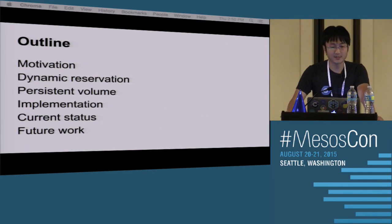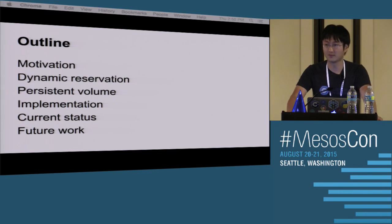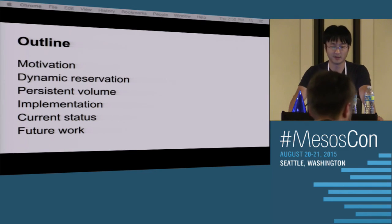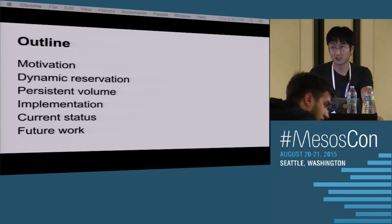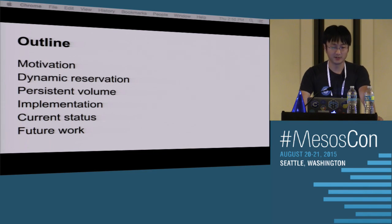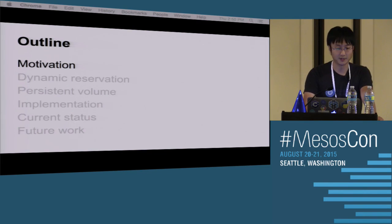This is the outline of our talk. I'm going to first go through the motivation — why we need these two primitives — and then we're going to go through each of them. One is called dynamic reservation, the other one is called persistent volume, and then we're going to go through the implementation, the current status, and the future work.